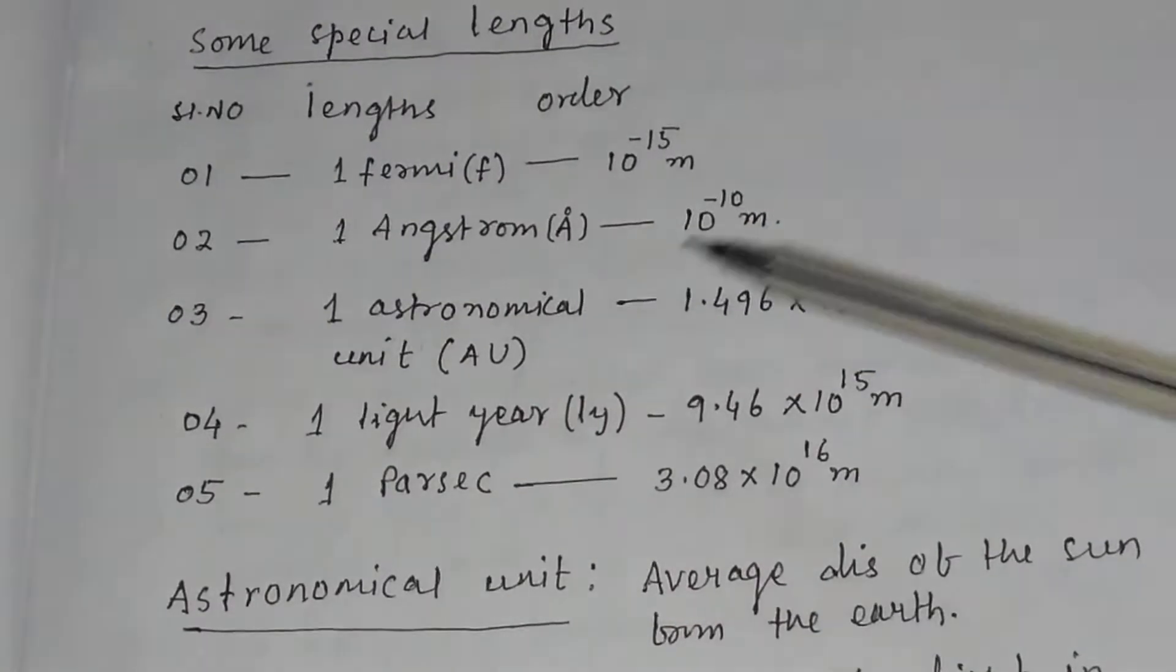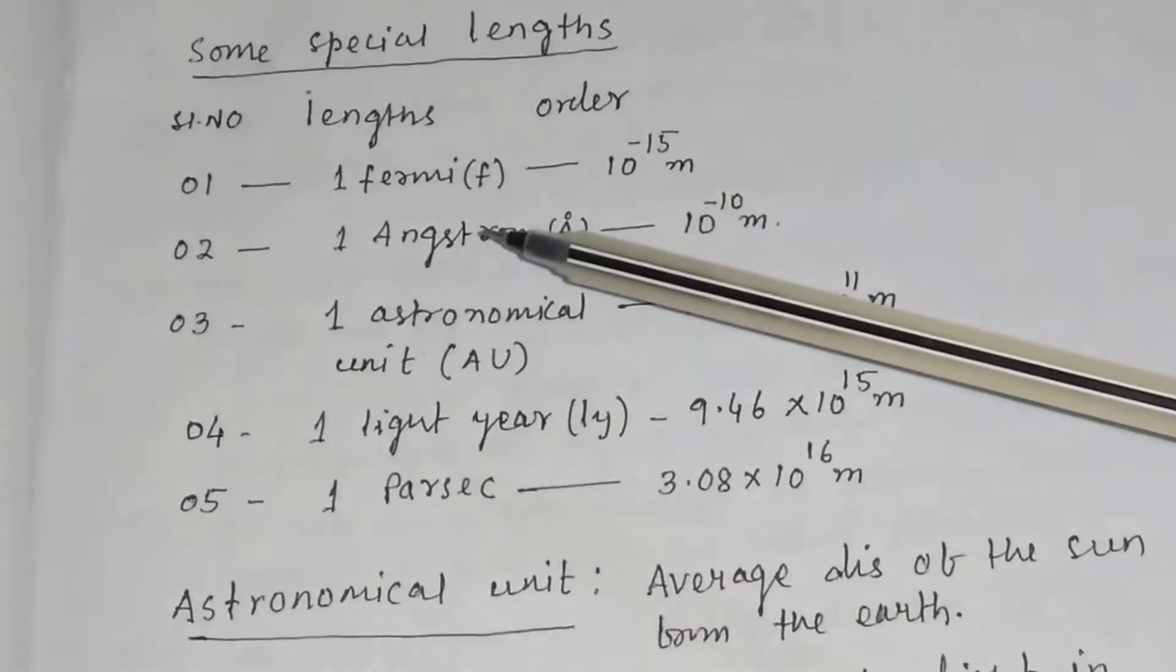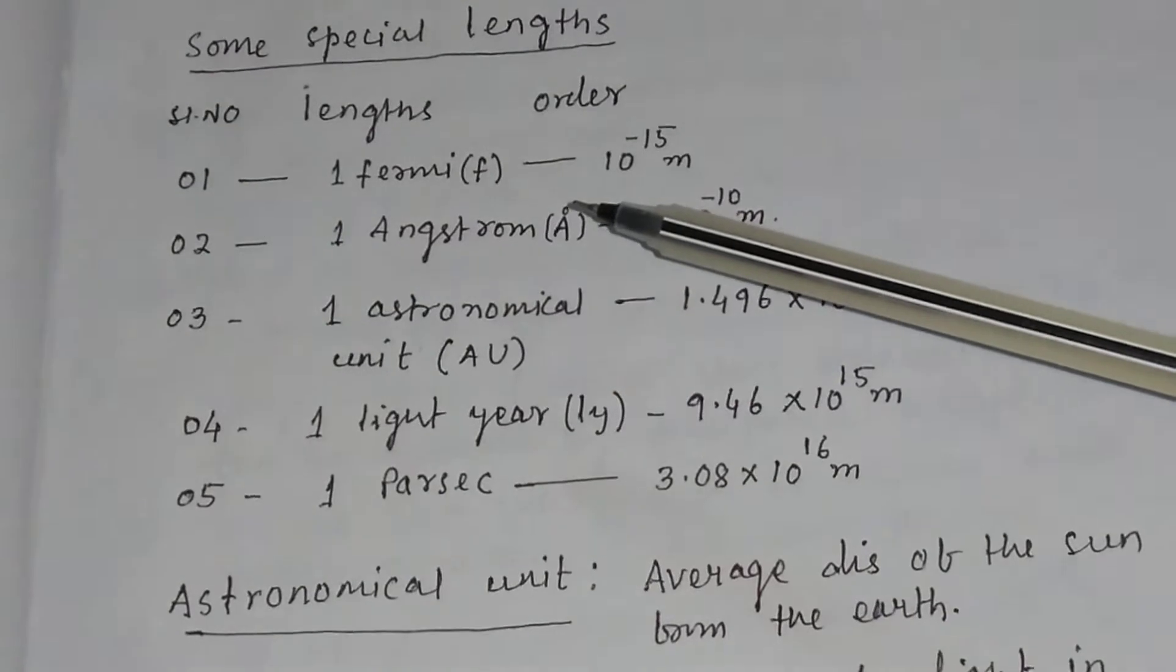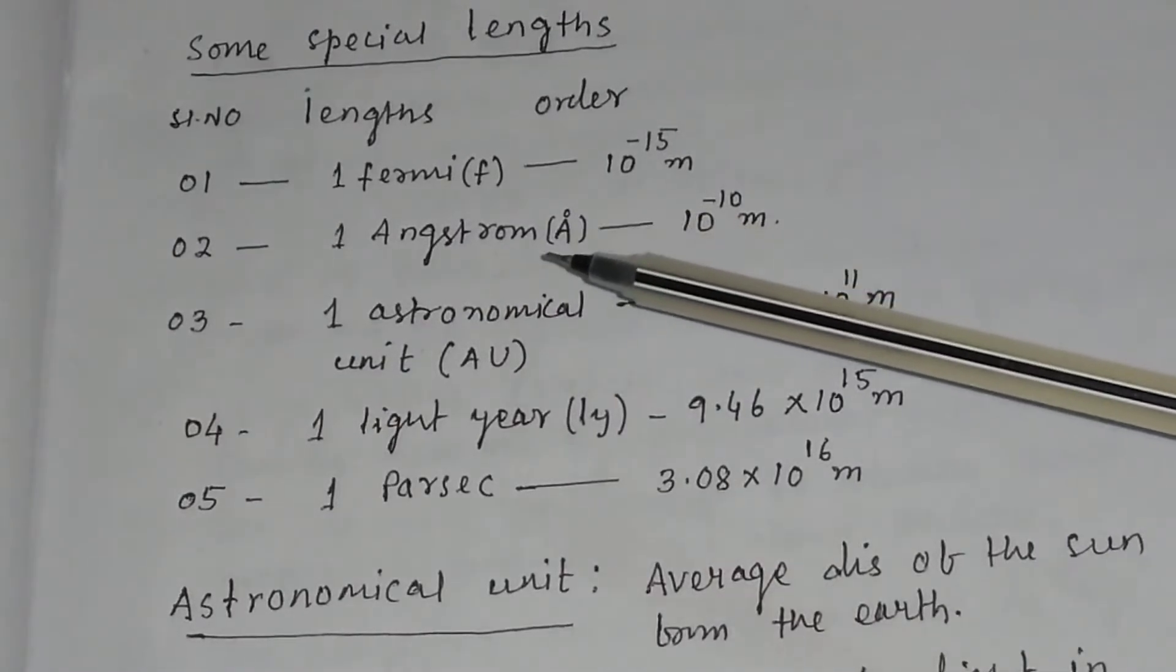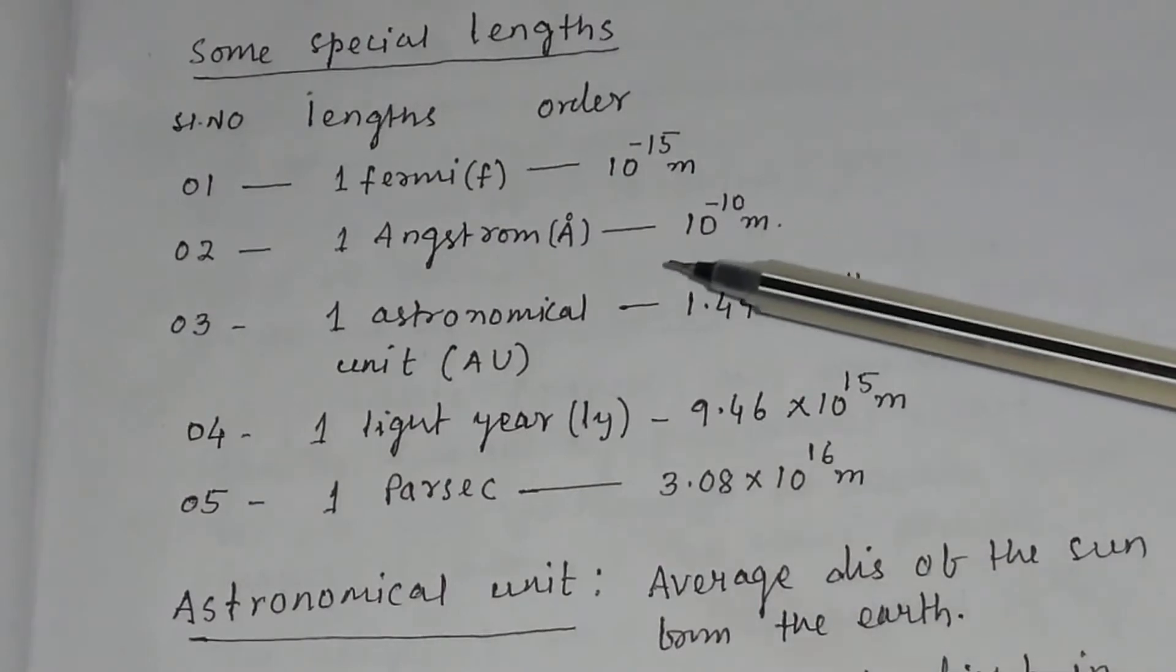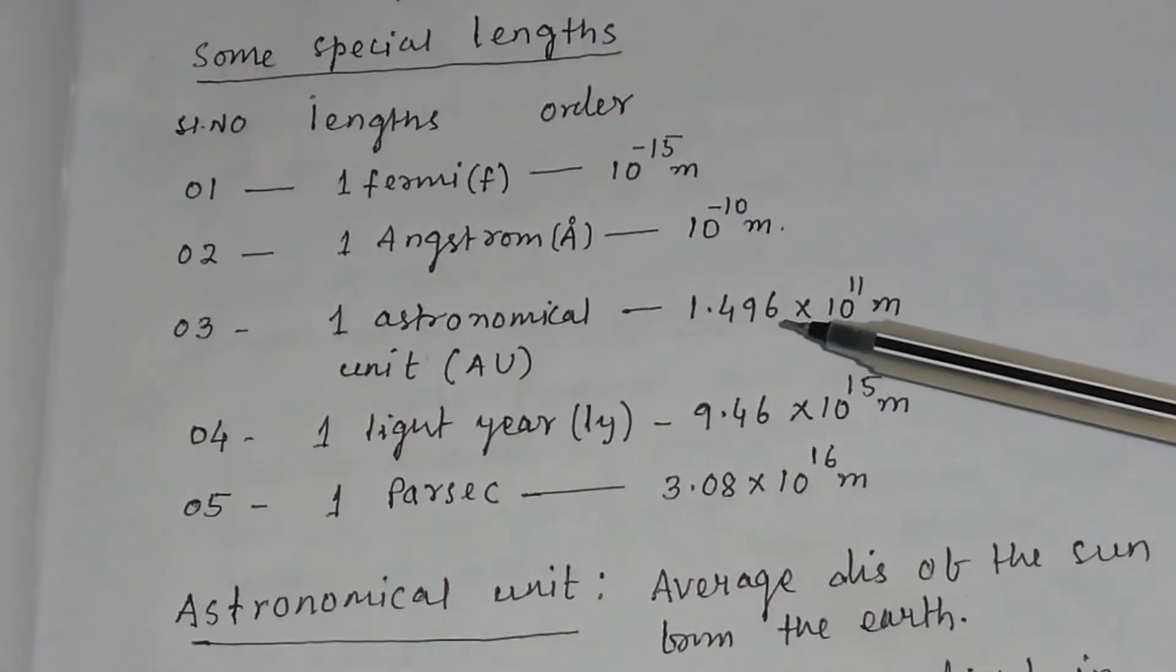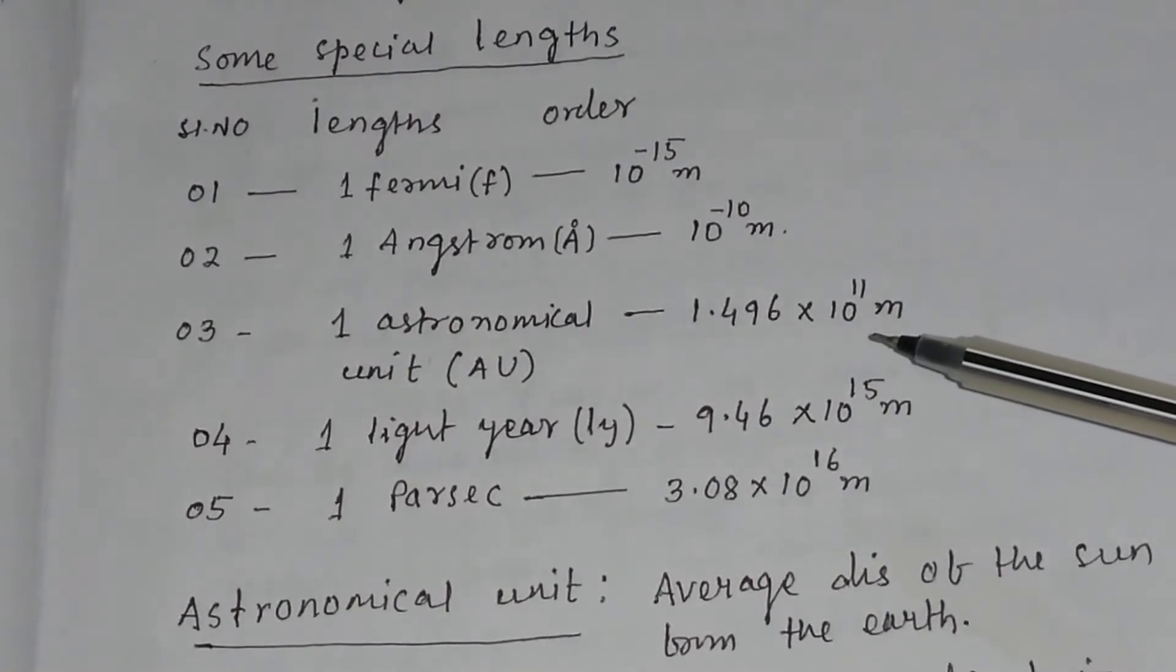We have also some special lengths like Fermi. One Fermi is equal to 10 to the power minus 15 meter. One Angstrom is equal to 10 to the power minus 10 meter. One astronomical unit is equal to 1.496 into 10 to the power 11 meter.